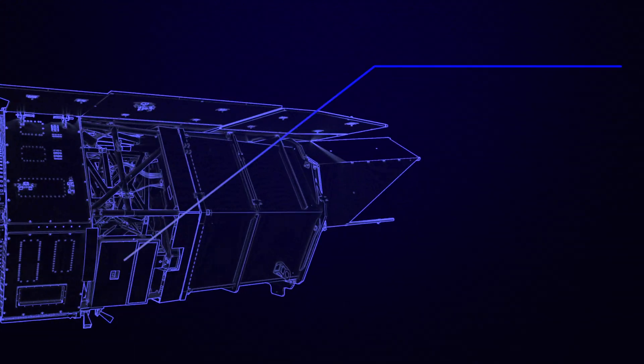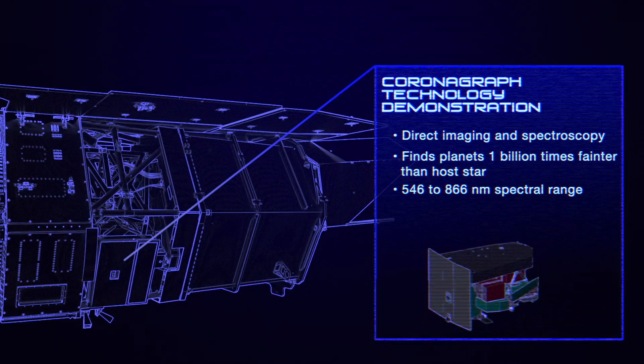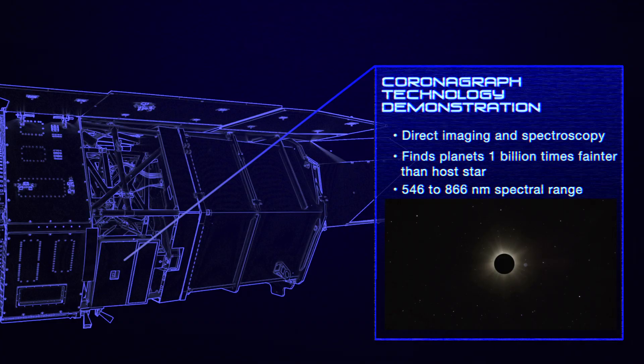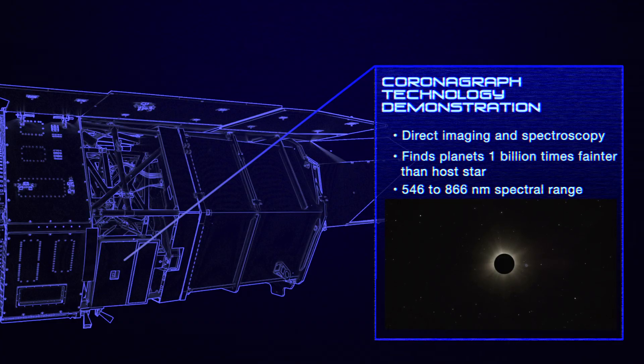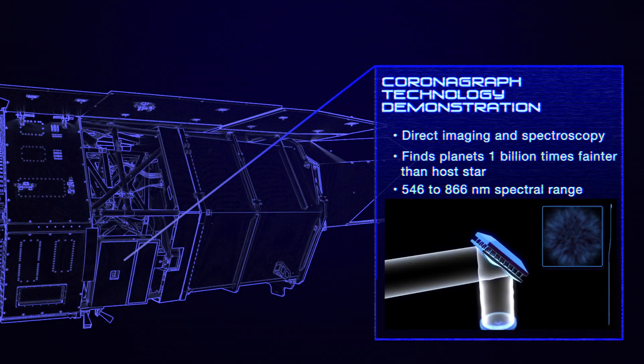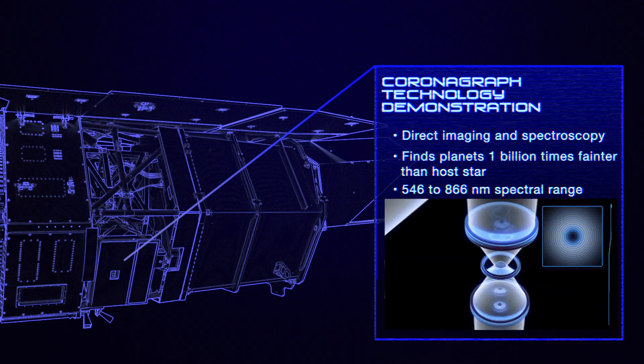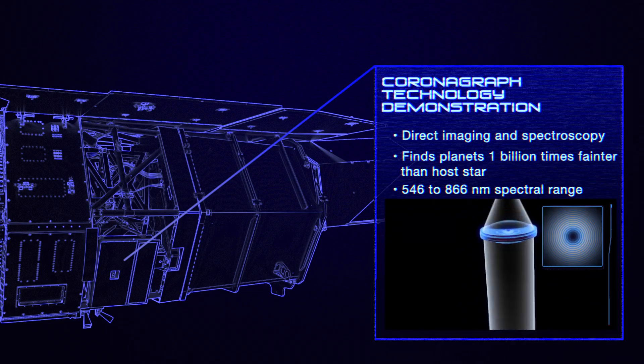WFIRST's other instrument is its coronagraph technology demonstration. A coronagraph blocks a star's light to capture the faint light from orbiting planets. It will be the first time a space telescope has used deformable mirrors to precisely control the incoming light, and special masks to block only the starlight.